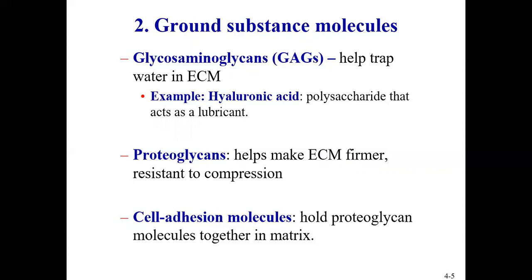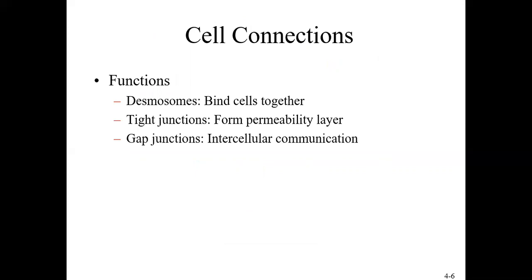You have a matrix with ground substance and protein fibers, and the cells that make up the tissue around it. When discussing tissues, we also need to talk about how cells in the tissues are connected. Three vocabulary words for that: desmosomes, tight junctions, and gap junctions. These are all connections that allow cells to come together. Desmosomes physically bind cells together. Tight junctions form a permeability barrier — like a gasket or seal around a cell. Gap junctions allow cells to communicate by sending signals between them.